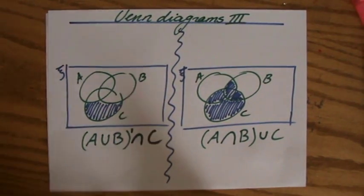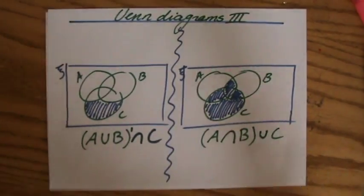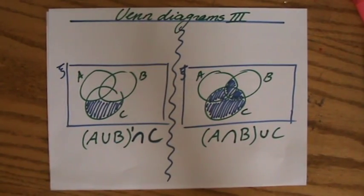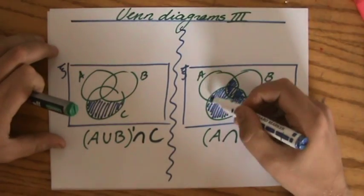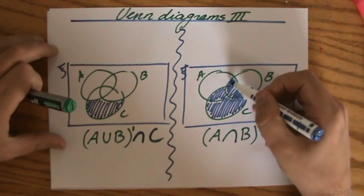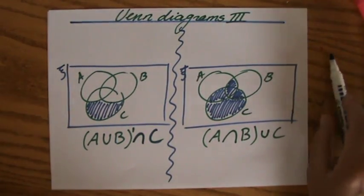So it needs to intersect with A and B, and it can also be in C. So everything inside of C, and everything inside the intersection of A and B.